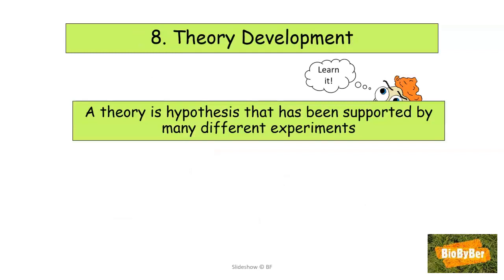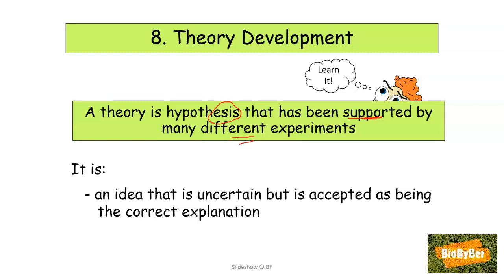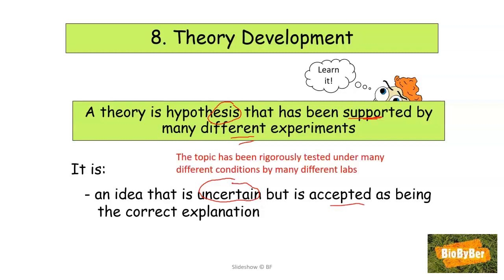The next step in the process might involve the development of a theory. The definition of a theory is rather important, so make sure you learn it. A theory is a hypothesis — basically a guess — but the difference is that it has been supported by many different experiments by many different scientists. In a nutshell, it is an idea that's uncertain, but it is accepted as being the correct explanation because it is supported by so many different experiments. It is a supported hypothesis.